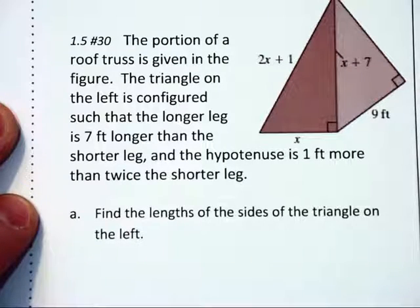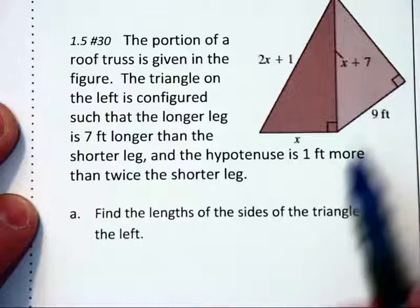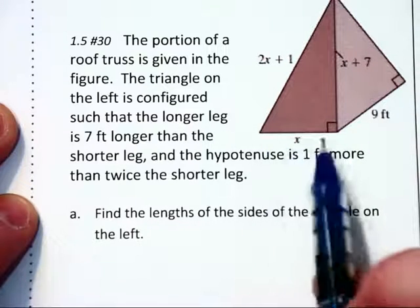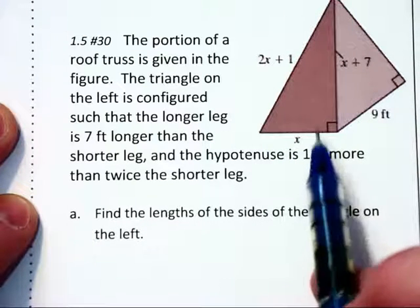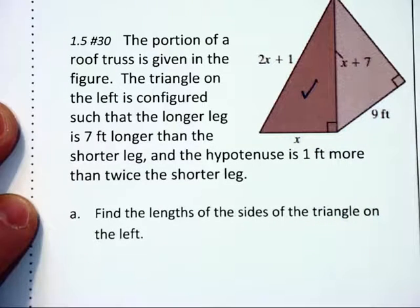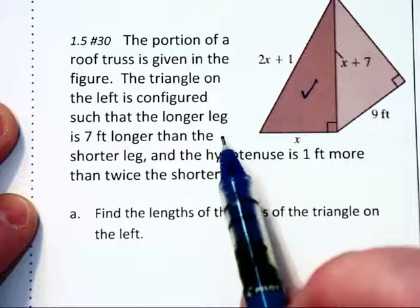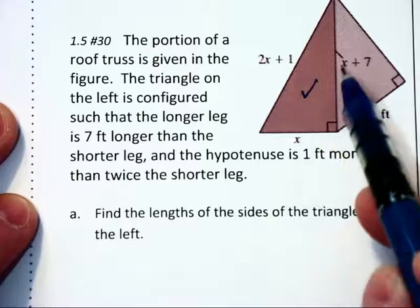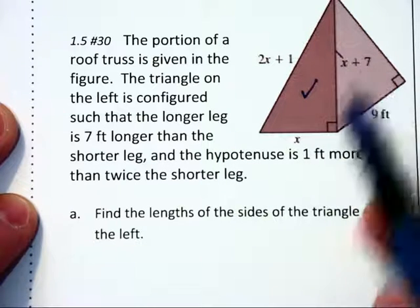Moving on to this next problem. The portion of a roof truss is given in our figure. The triangle on the left, which we're going to focus on now, is such that the longer leg is 7 feet longer than the shorter leg. We see x plus 7 and x.